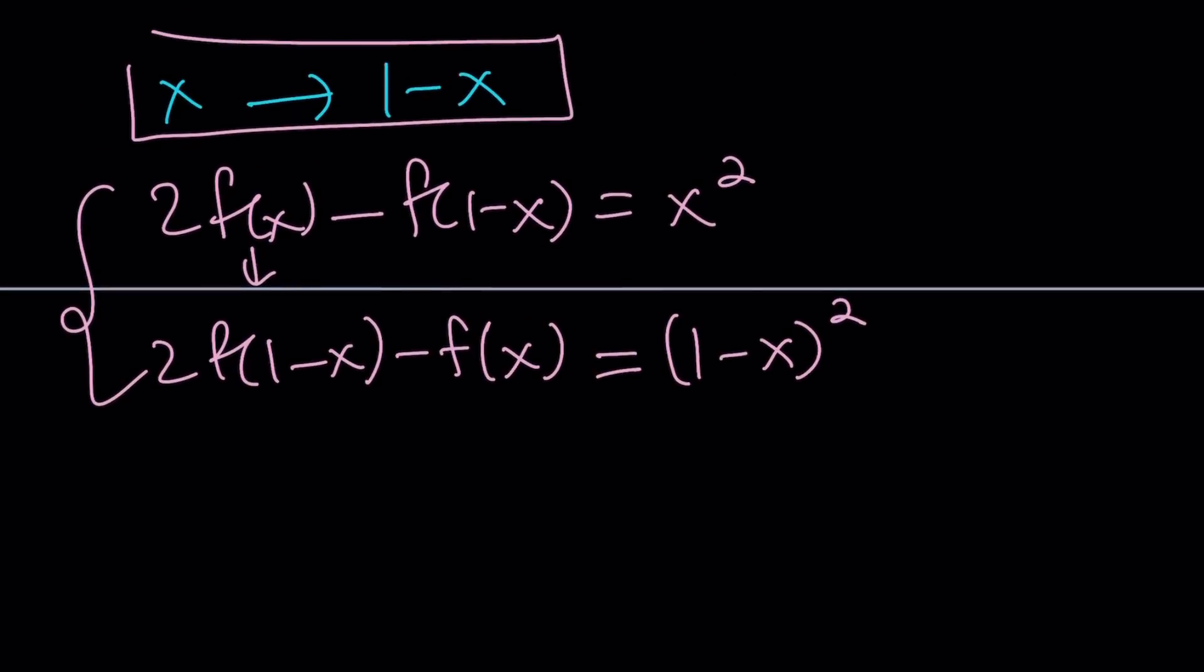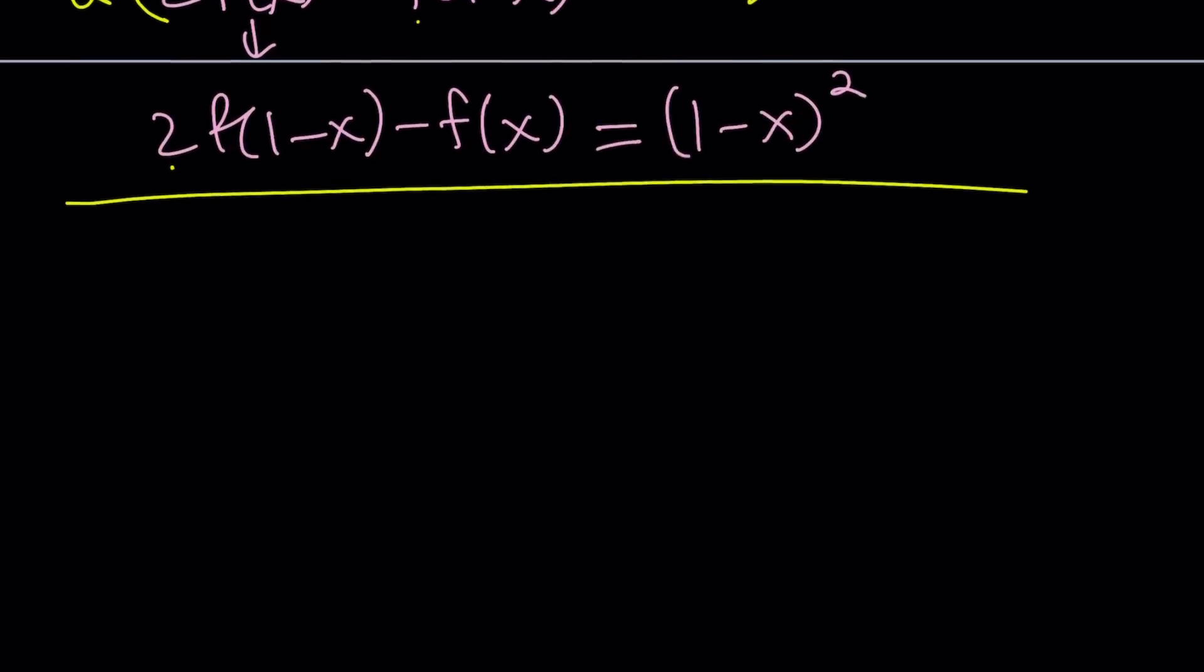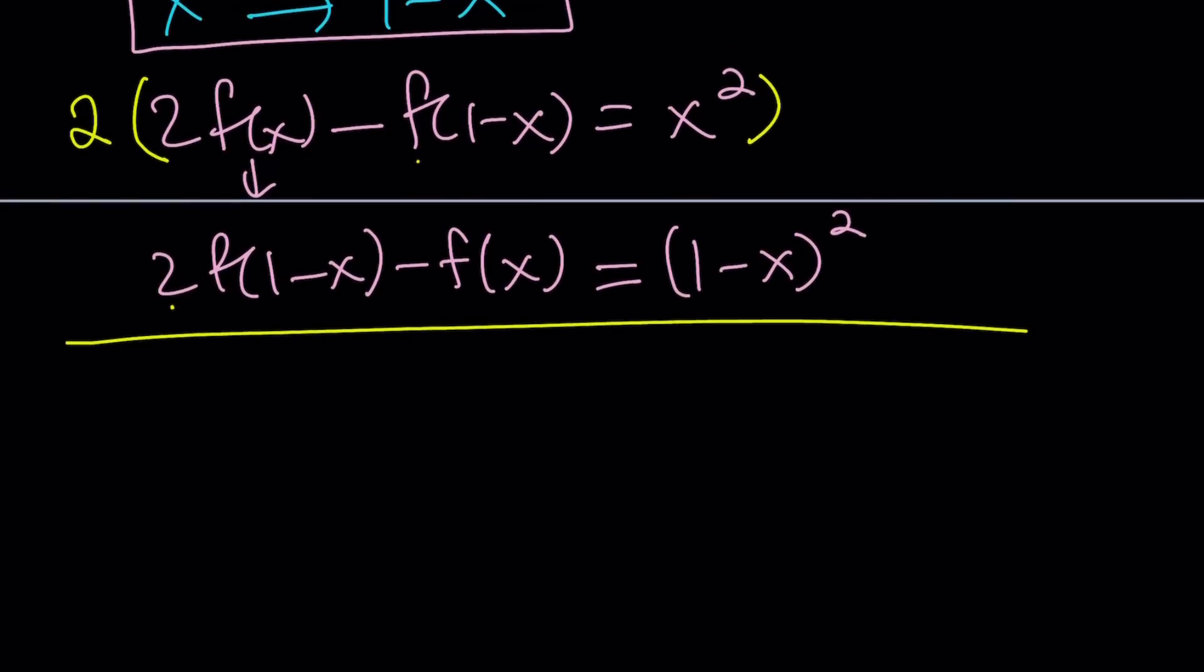To solve this system, we can get rid of f(1-x). And f(1-x) comes with different coefficients: it comes with 2 here, and negative 1 here. So in order to eliminate f(1-x), all I have to do is multiply the top equation by 2 and add to the second equation.